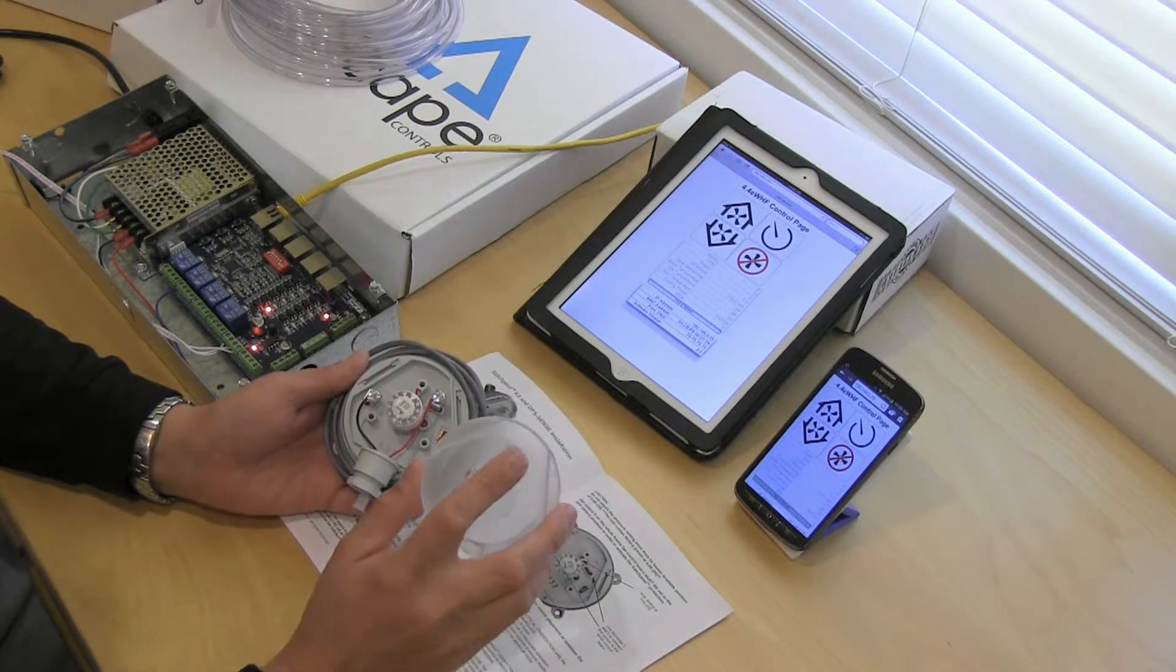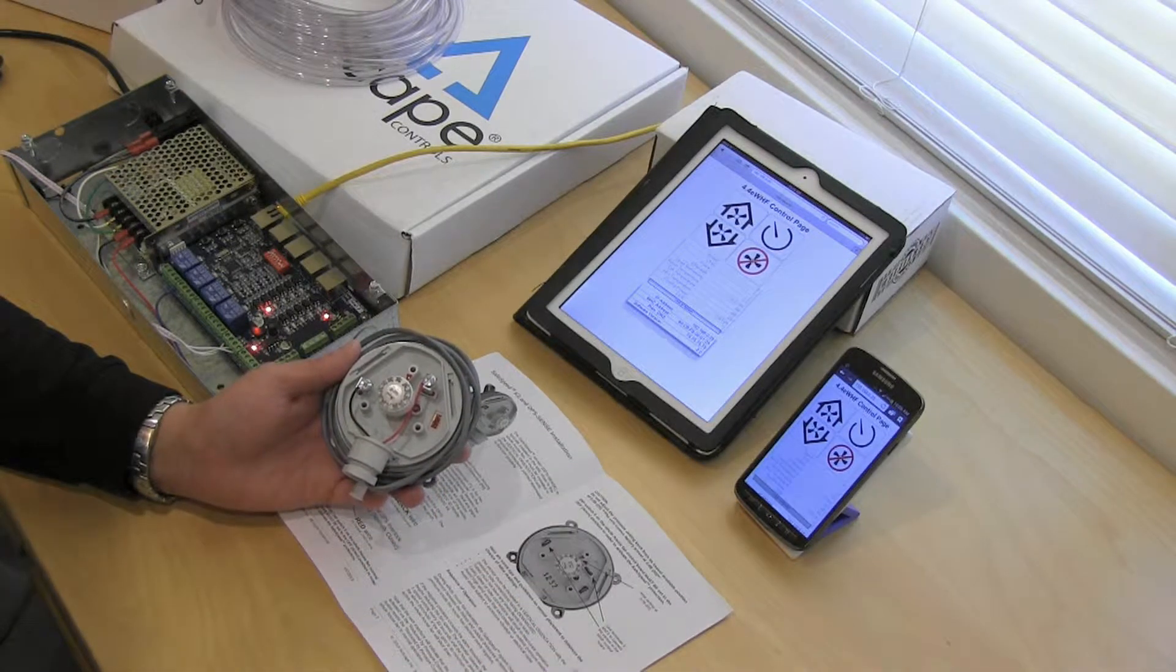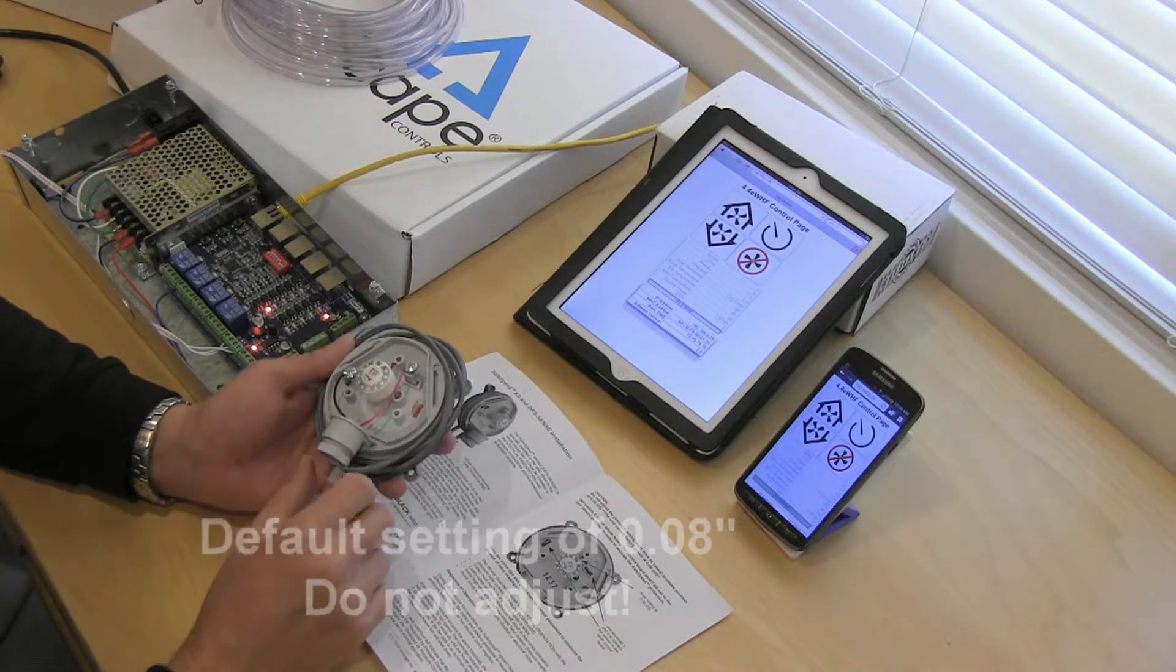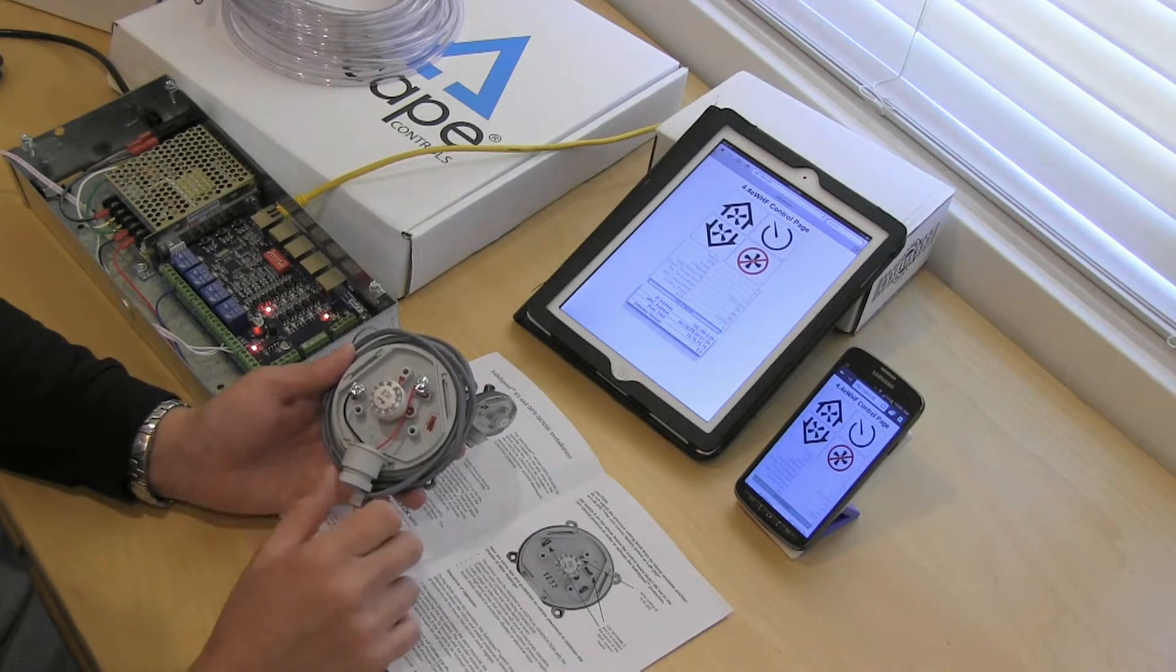I'll take the cover off for you. It's got a little screw there that holds the cover in place. Adjustment knobs for the setting, we recommend do not touch it. It's already pre-wired so don't touch the wiring as well.